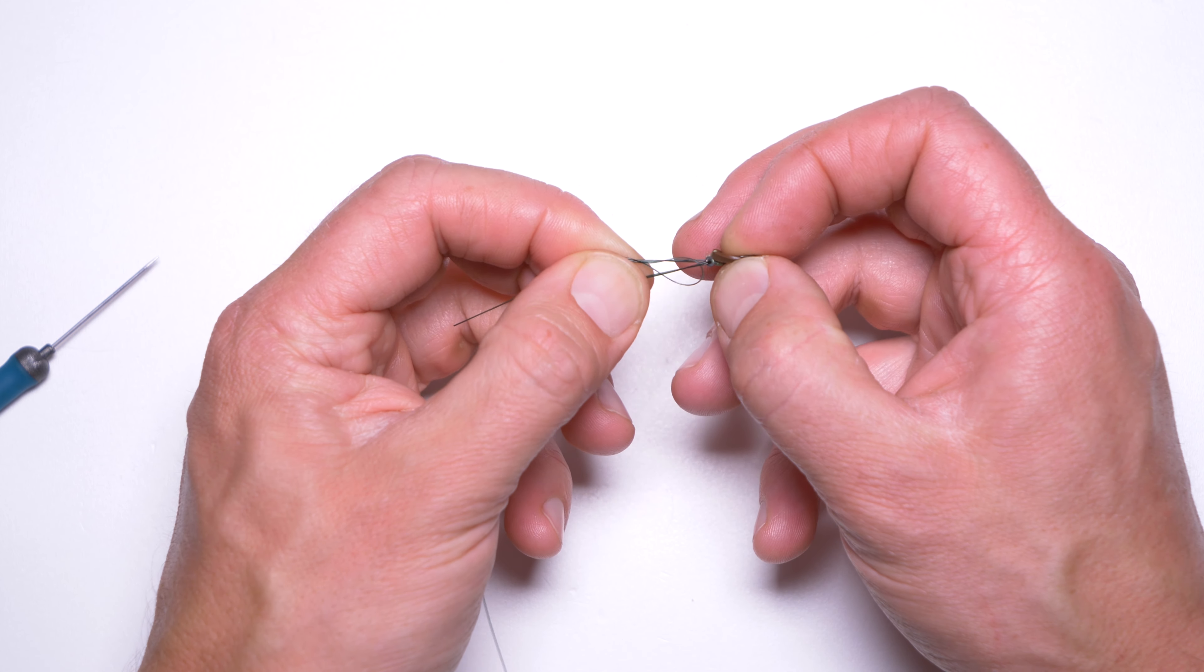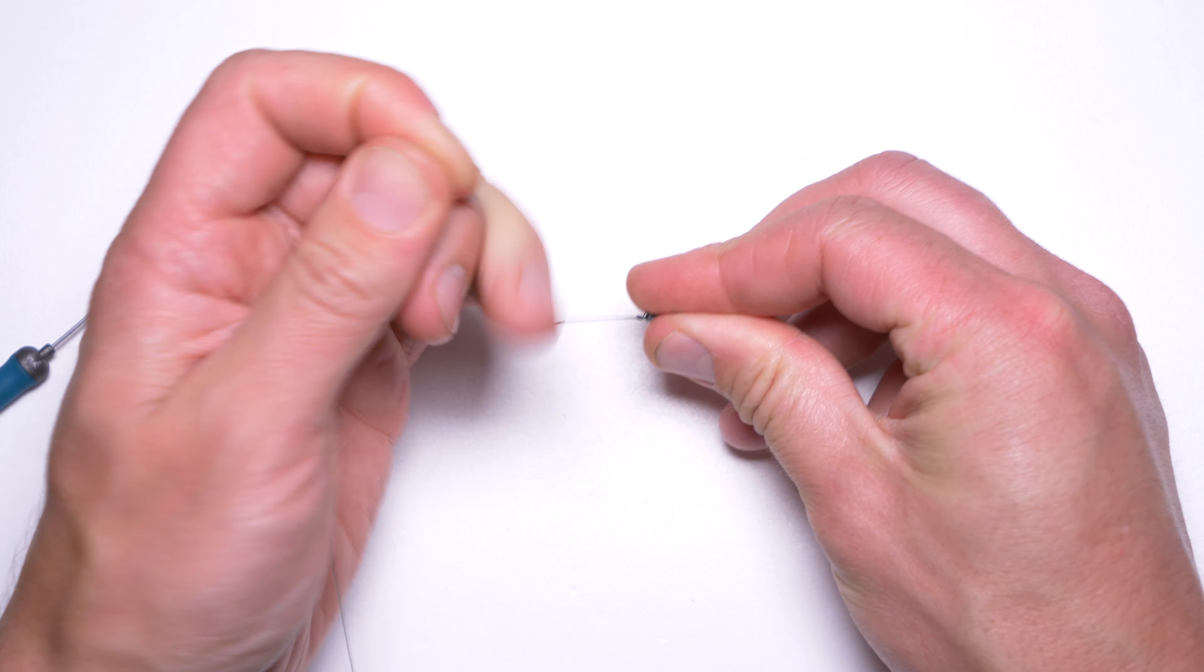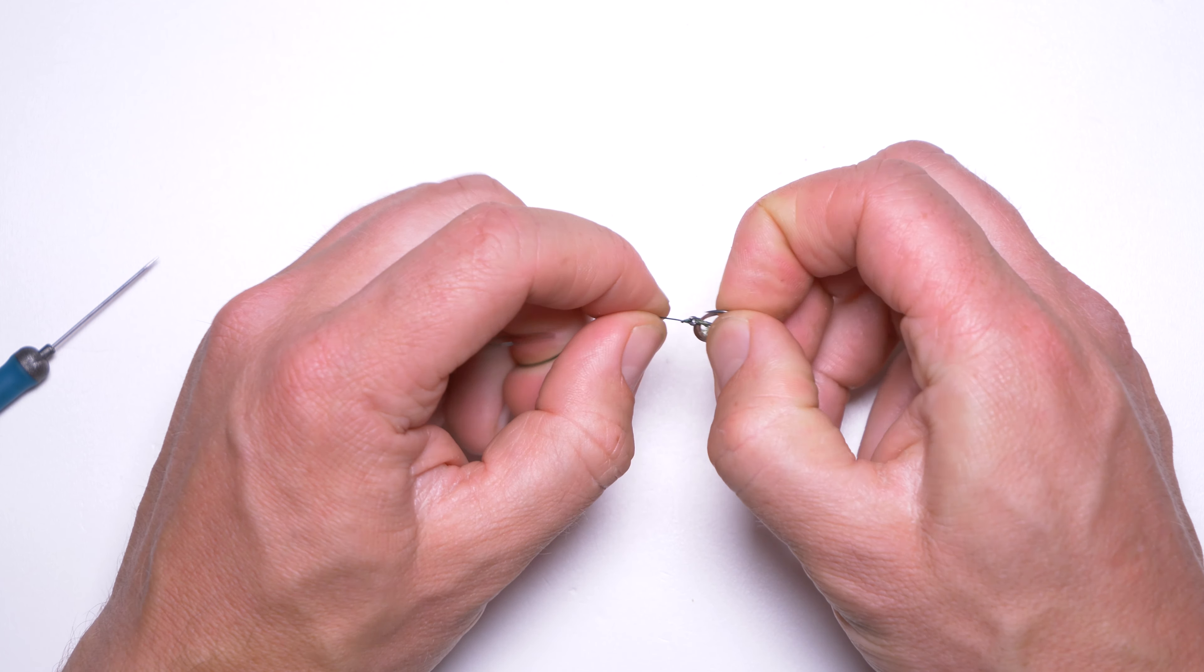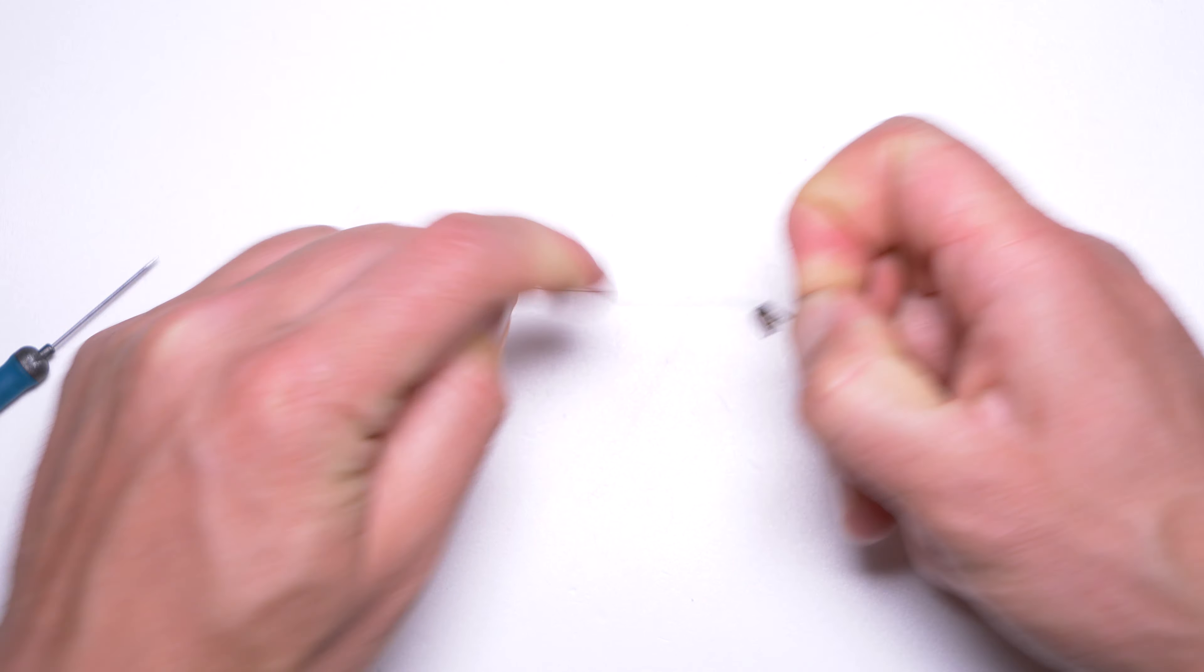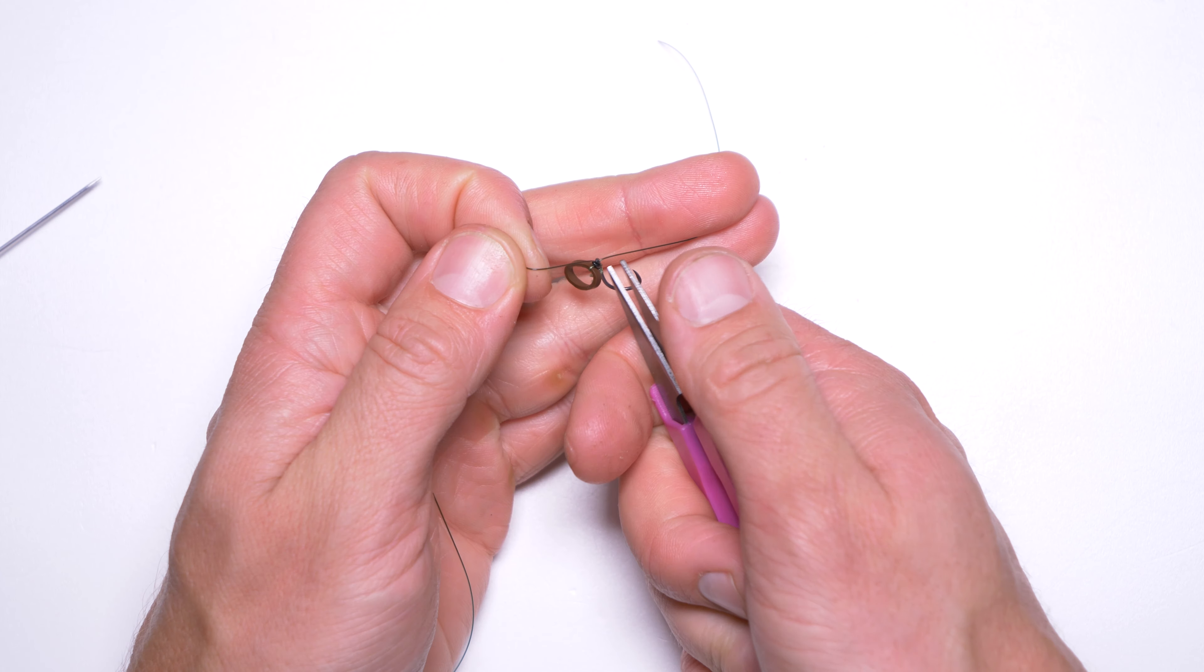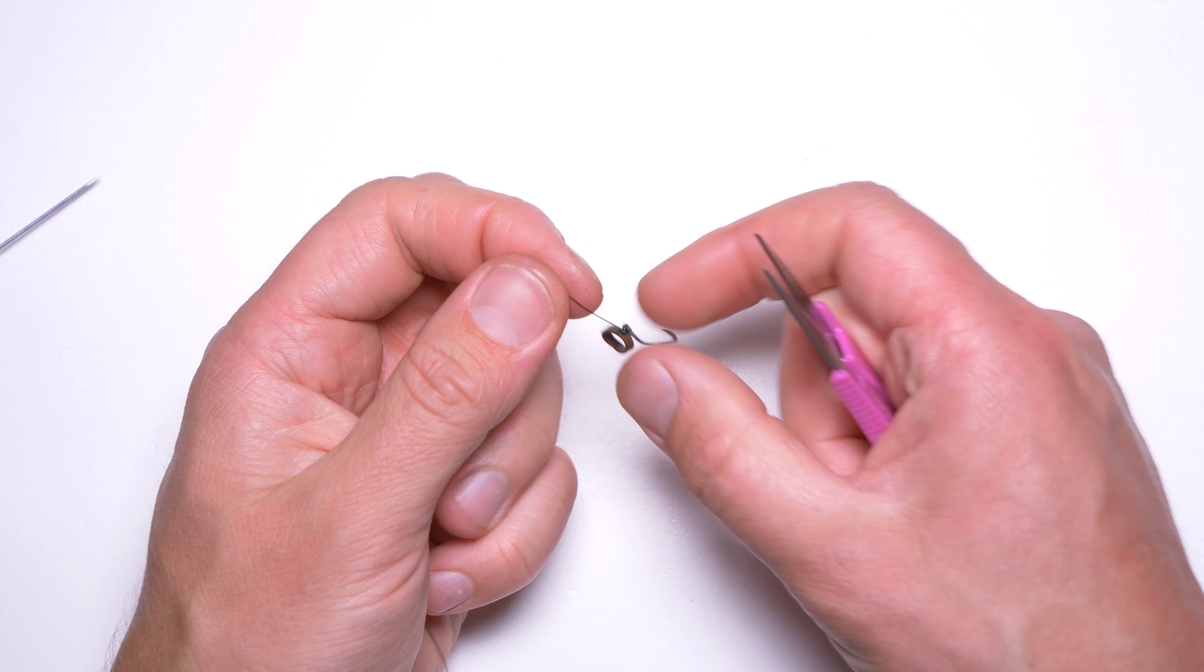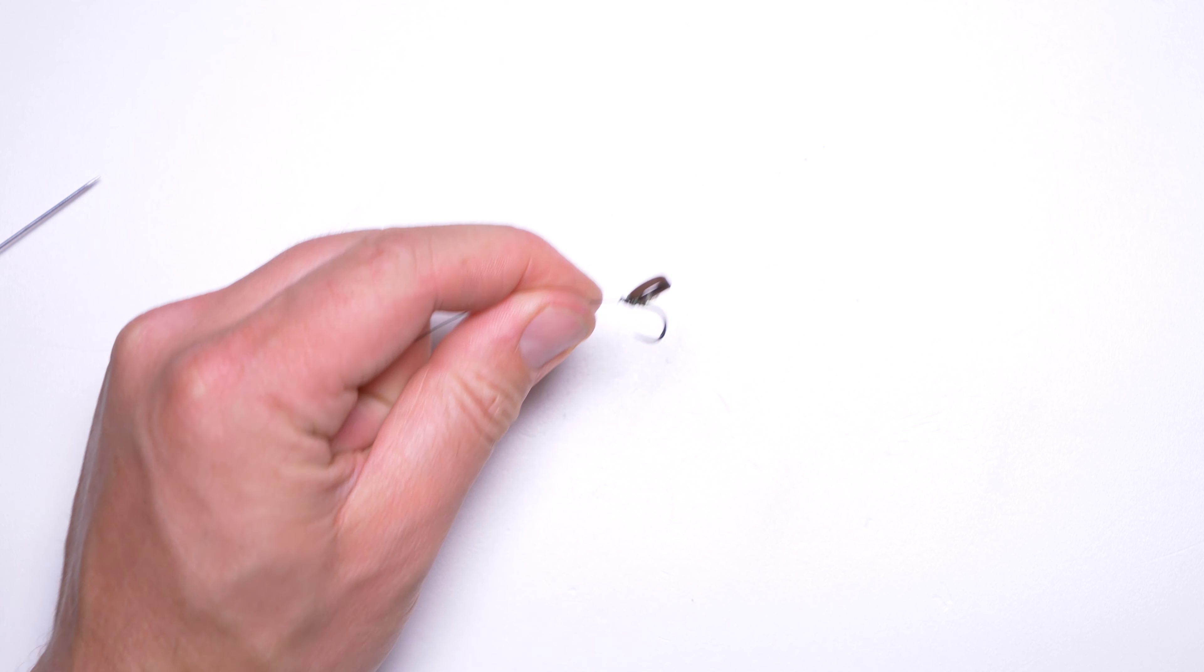You have a little loop and you pull the hook through that loop. Wet the line just before pulling it tight, and that's the strongest knot you can get. And that's it.